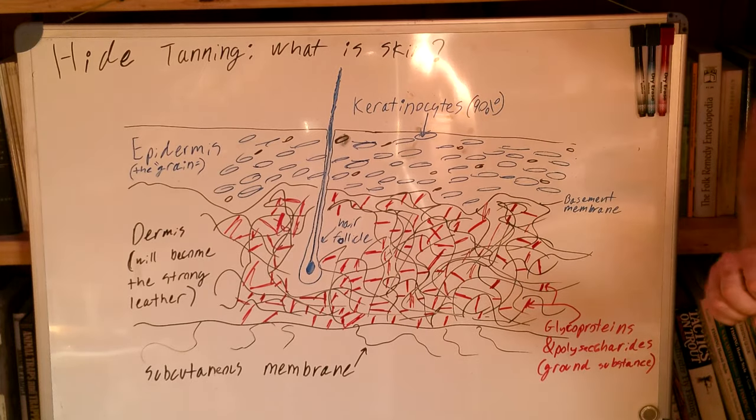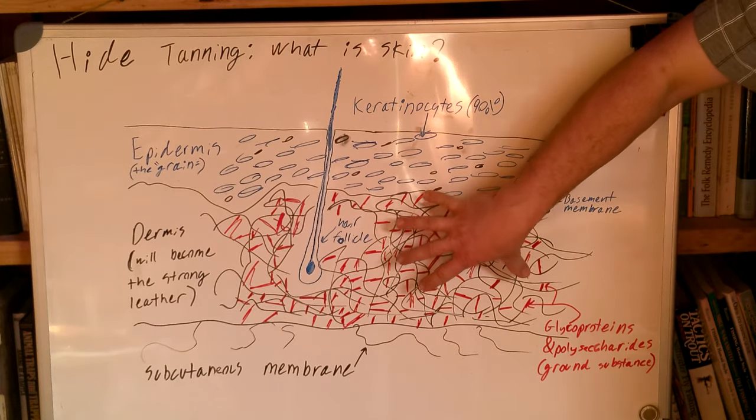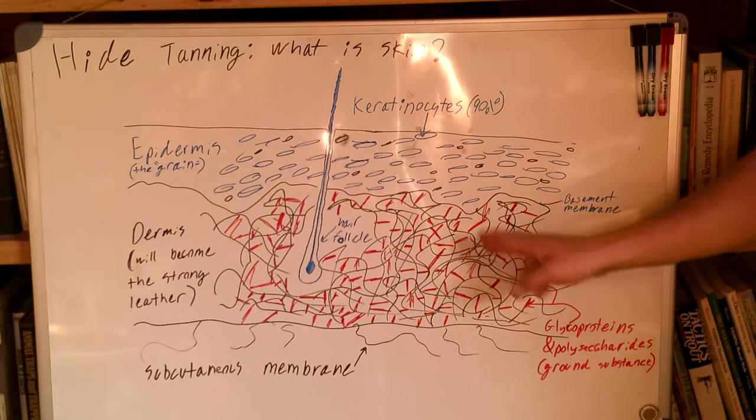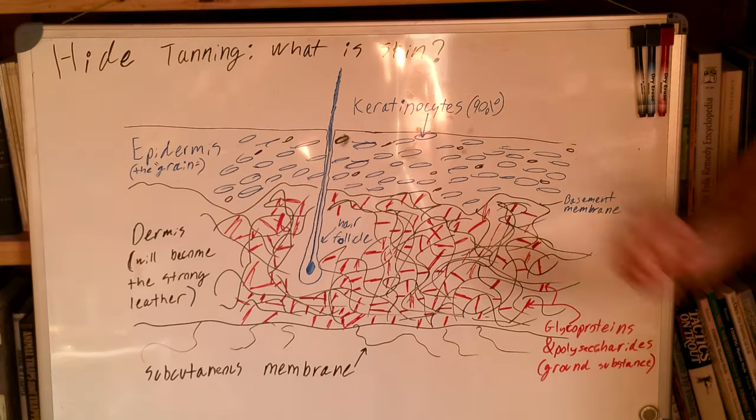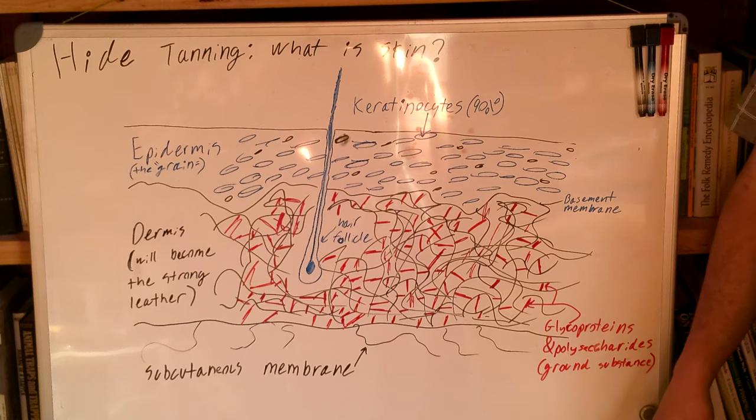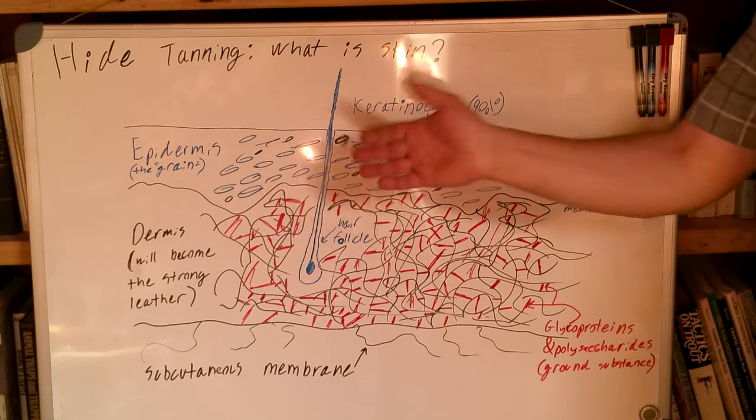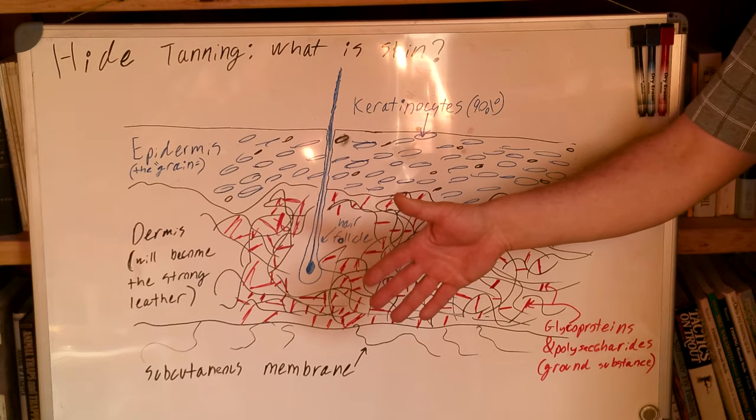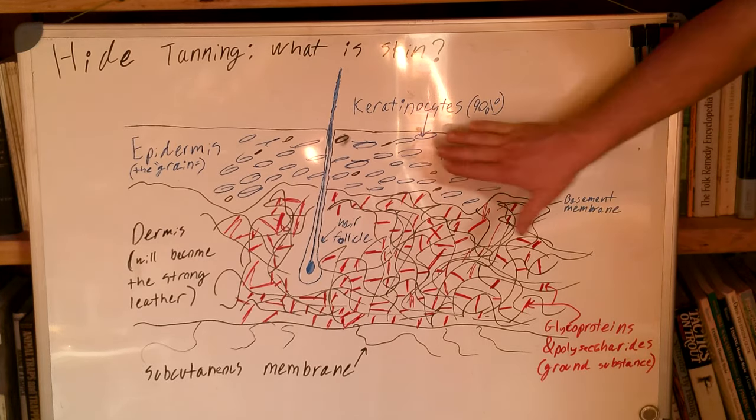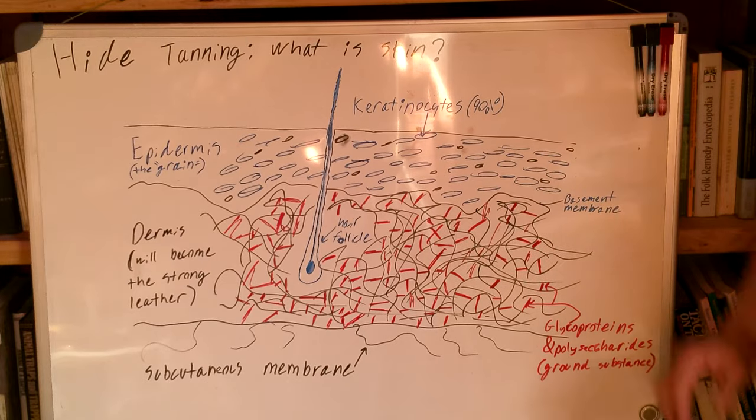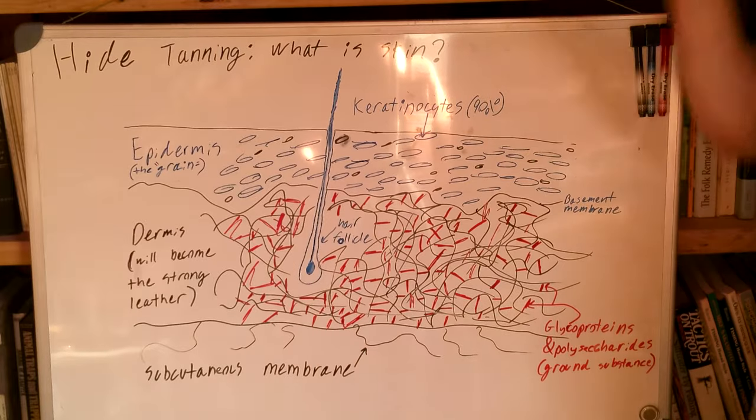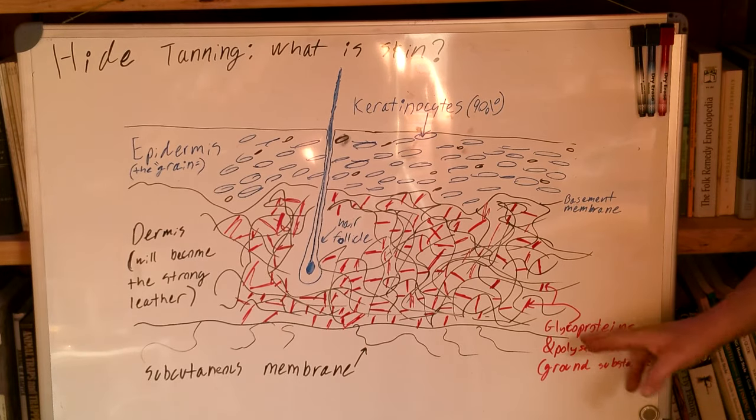Then we get down here to the dermis, and this is the real leather. We want to preserve these collagen and elastin fibers. Fortunately, they don't care whether they're in acid or base. They will be preserved.